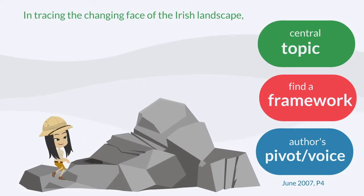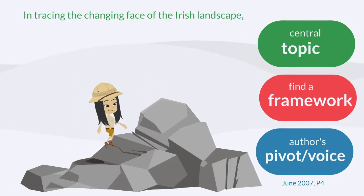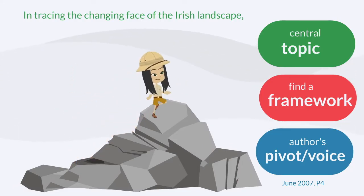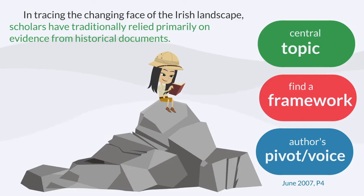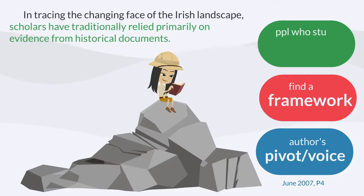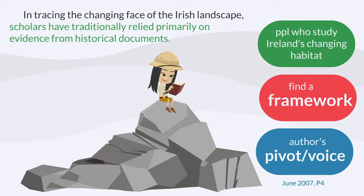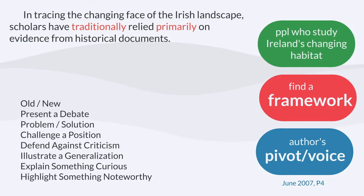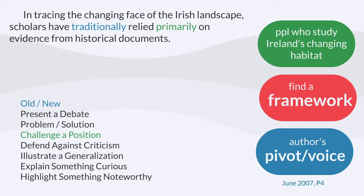I understand what 'changing Irish landscape' means now. There are scholars who basically research this and they rely primarily on documents. So right now I think the topic is people who try to measure how Ireland's rocks and grasses have changed. Now what sort of framework might this be leading towards? The idea of 'traditionally' hints at old versus new, and 'primarily' often indicates that the author will kind of challenge that — go against the mainstream. And sure enough, the next sentence starts with one of those signature author pivot words.